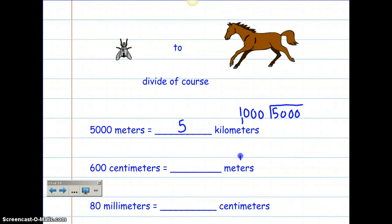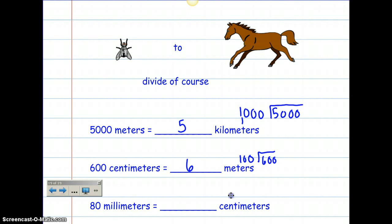I know there are 100 centimeters in every meter. So I'm going to do 600 divided by 100, and that gives me 6 — so that would be fly to horse, divide of course, from centimeters to meters. There are 6 meters for every 600 centimeters. Then for millimeters to centimeters, I'm going to take 80 and divide by 10, and 10 goes into 80 eight times. These conversions are super easy when you're doing them.